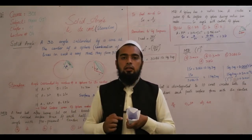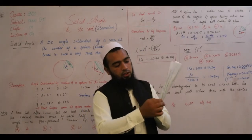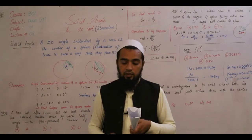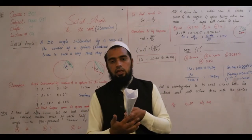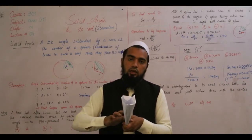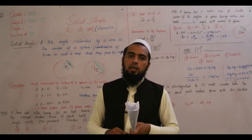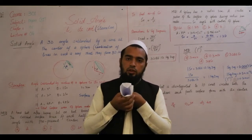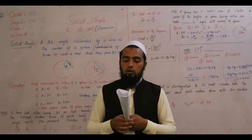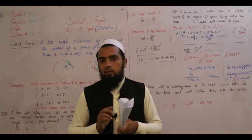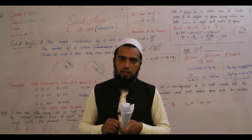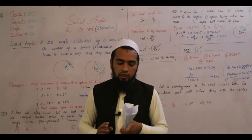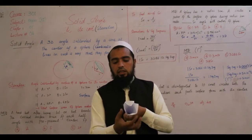اسی طرح نیچے والا line اور اوپر والا line — ان کے بیچ میں بھی center پر ایک angle بن رہا ہے. اس side والا line اور اس side والا line — ان lines کے بیچ میں بھی اندر ایک angle بن رہا ہے. یہ accordingly ایک ہی angle بنا رہے ہیں جو آپ کو cone کے اندر نظر آ رہا ہے. اور یہ angle two dimensions میں نہیں پھیلا ہوا — یہ three dimensions میں پھیلا ہوا ہے.